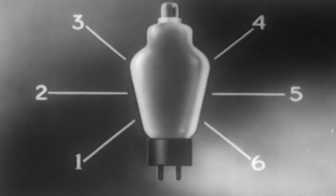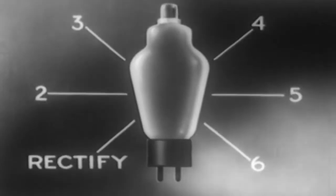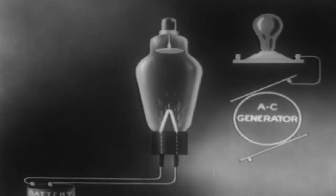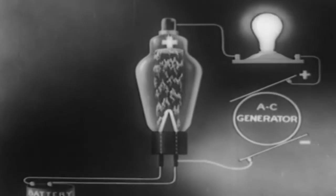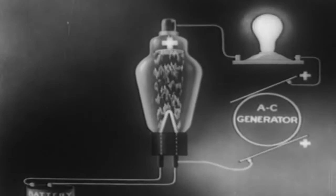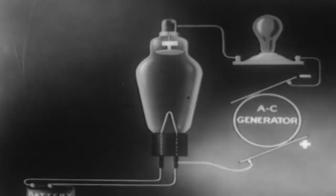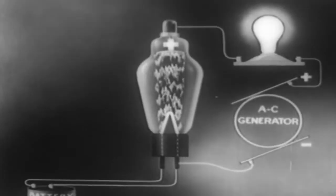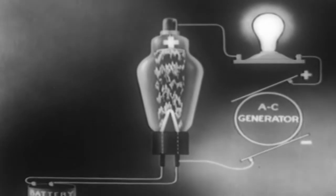In the first place, we can rectify current with it, converting AC to DC. We can do this merely by connecting an electronic tube in series with an AC circuit. As you study this circuit diagram, note that only each positive half wave of AC voltage will now produce a current.